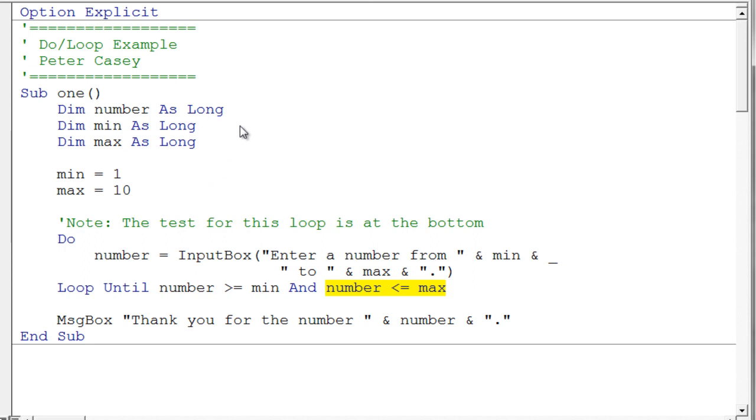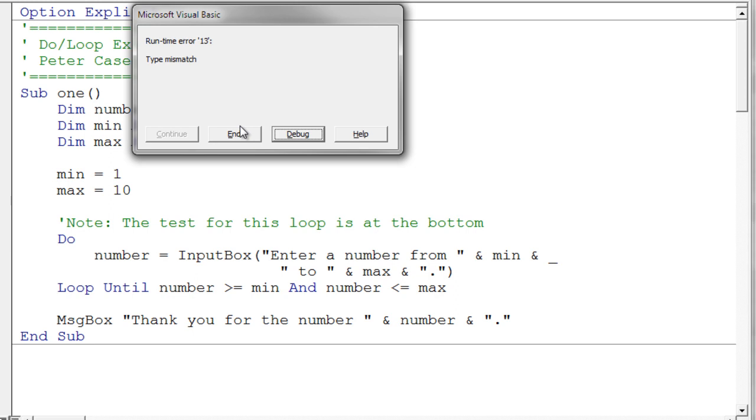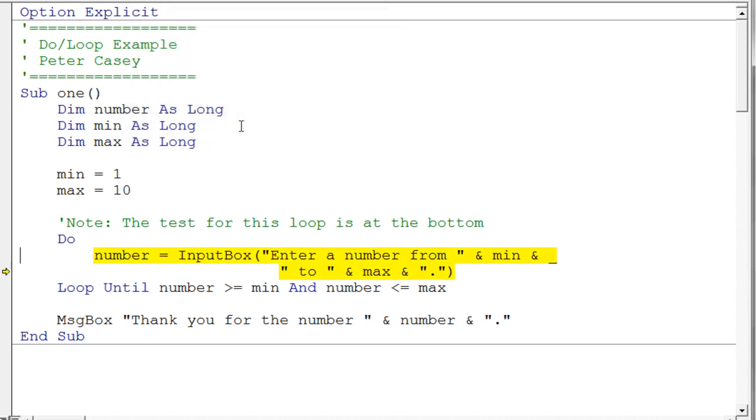So let's go ahead and run this and just see how this works. Hit F5 and the program is running and I'm going to enter the number 0. And I got an error message. Now I have no idea why I got an error message because I think I did something wrong on my keyboard here.